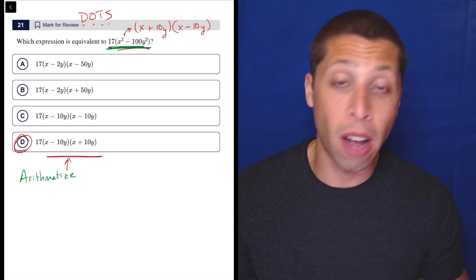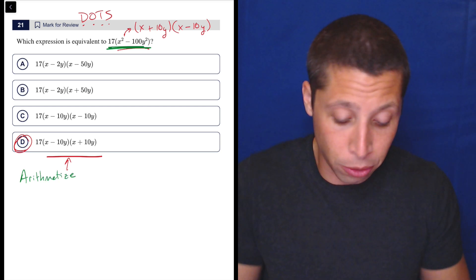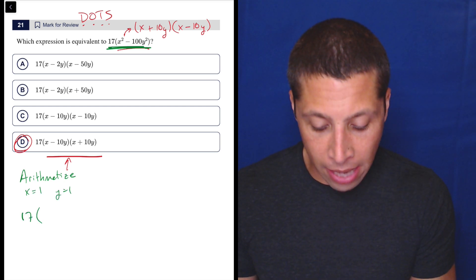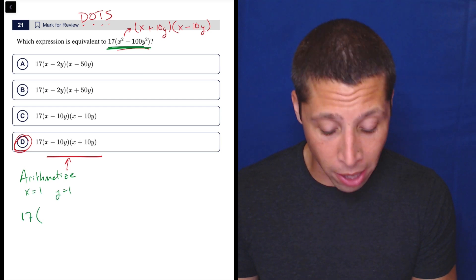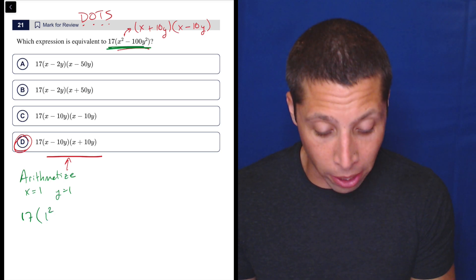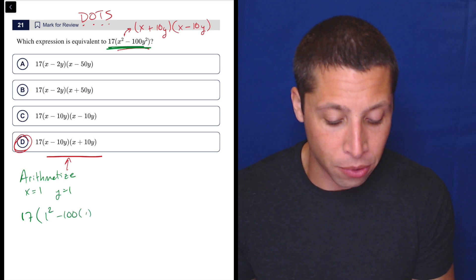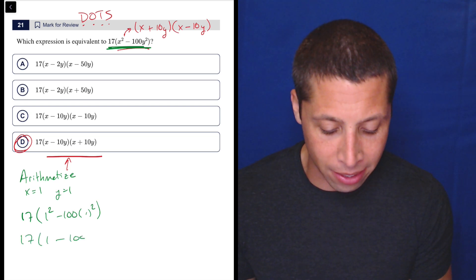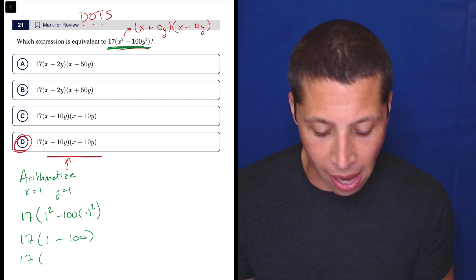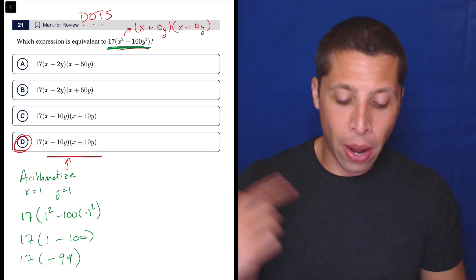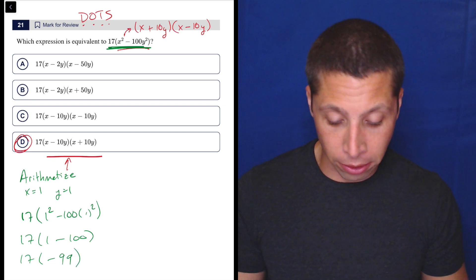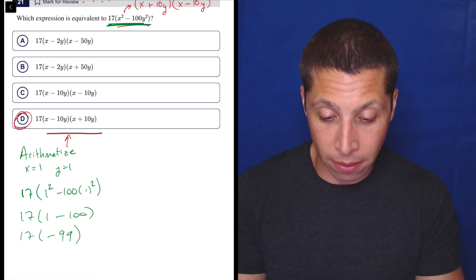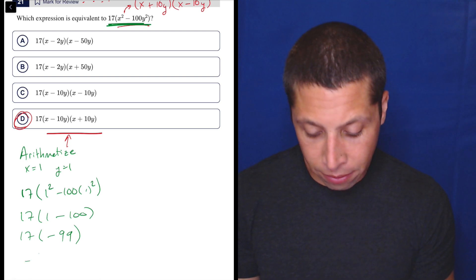At no point do they ask me to solve for x or solve for y, so I could do something very lazy and say x is 1 and y is 1, meaning that 17x squared minus 100y squared is really 17 times 1 squared minus 100 times 1 squared. So, this isn't really that hard because we picked 1, this is 1 minus 100, so that's 17 times negative 99. Now I could go to the calculator and just turn that into one number, and I guess I will because that's normally how I do it. So, 17 times negative 99 is negative 1683.